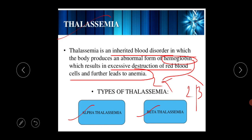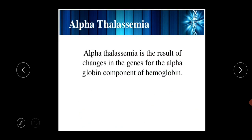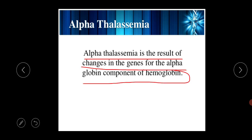That is why thalassemia types are alpha thalassemia and beta thalassemia. Alpha thalassemia is related to the alpha chain of the hemoglobin protein, and beta thalassemia is related to the beta chain. In alpha thalassemia, this is the result of changes in the genes for the alpha globin protein of the hemoglobin.